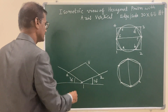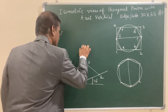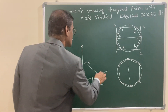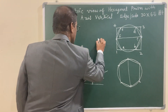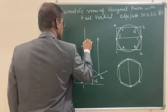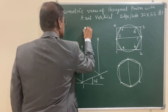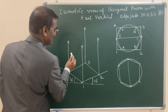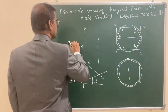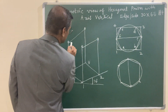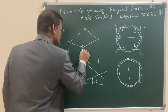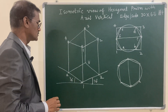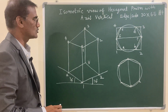From each corner point, draw the given height of 65 mm vertically. From point one draw 65 mm, from point two draw 65 mm, from point three draw 65 mm, and from point four draw 65 mm. These vertical lines are all parallel, giving you points one, two, three, four at both the bottom end face and the top end face.